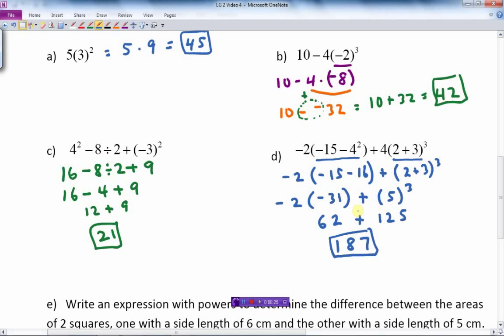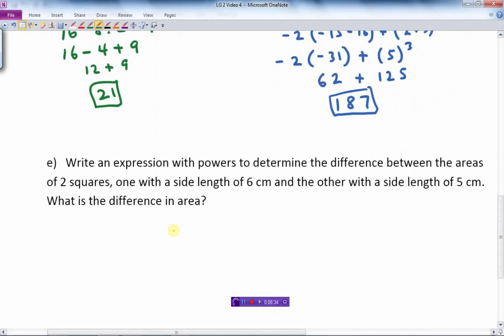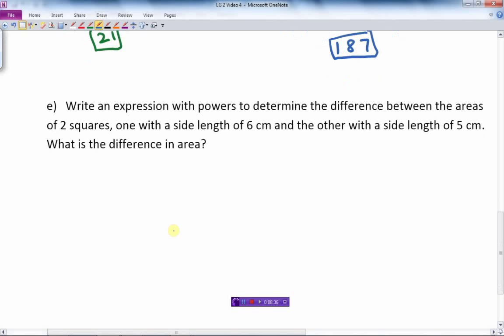We add those together and we get 187. That's our final answer. Step by step, so try not to skip steps or do too many steps at the same time or you're going to make a mistake.